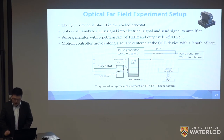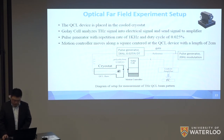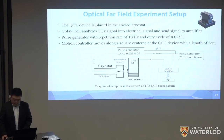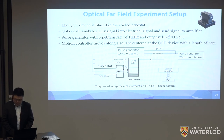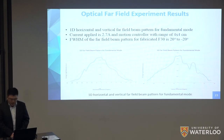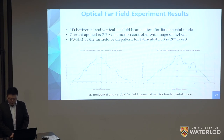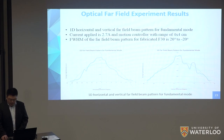For the optical far-field beam pattern, a 1D far-field experiment was conducted using a cryostat and a Golay cell. After mounting the QCL device on a copper package and placing it in the cryostat, terahertz radiation passes through a polyethylene window — approximately 70% transparent — and is detected by the Golay cell, which converts the terahertz signal to an electrical signal sent to an amplifier for data acquisition. Due to connection issues with the motion controller, the far-field pattern was measured manually at a current supply of 2.7 A with a rotating stage range of 4×4 cm. The measured fundamental mode beam pattern for F30 showed the expected behavior, spanning approximately ±20 degrees.